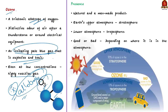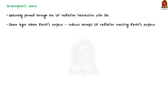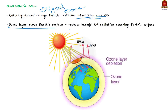It occurs in the Earth's upper atmosphere — that is, in the stratosphere — and in the lower atmosphere, that is, in the troposphere. Depending on where it is in the atmosphere, ozone affects life on Earth in either good or bad ways. Stratospheric ozone is formed naturally through the interaction of solar ultraviolet radiation with molecular oxygen. This ozone layer above the Earth's surface reduces the amount of harmful UV radiation reaching the Earth's surface.